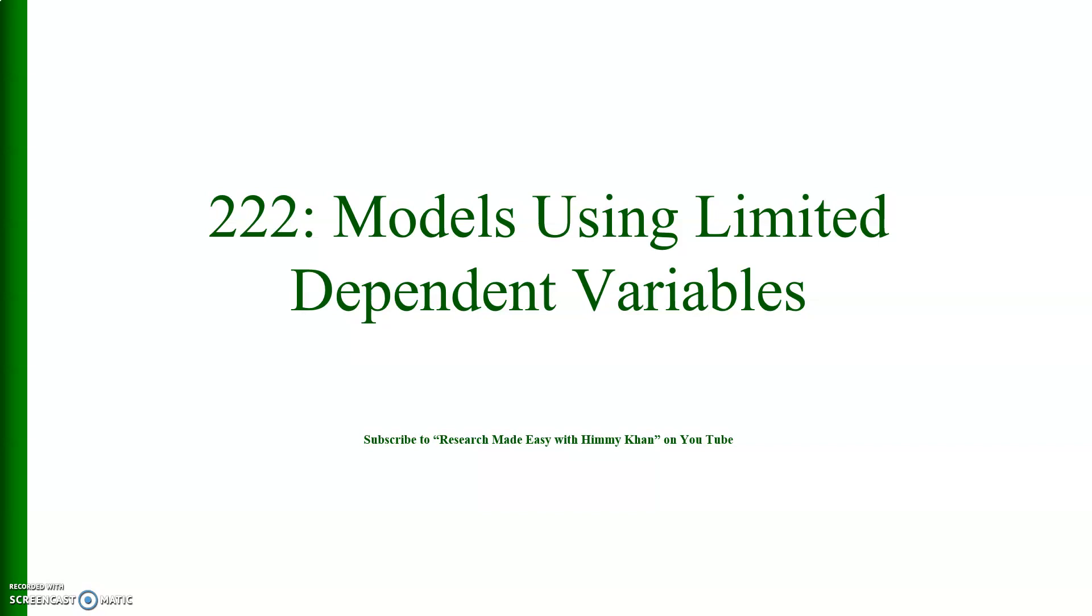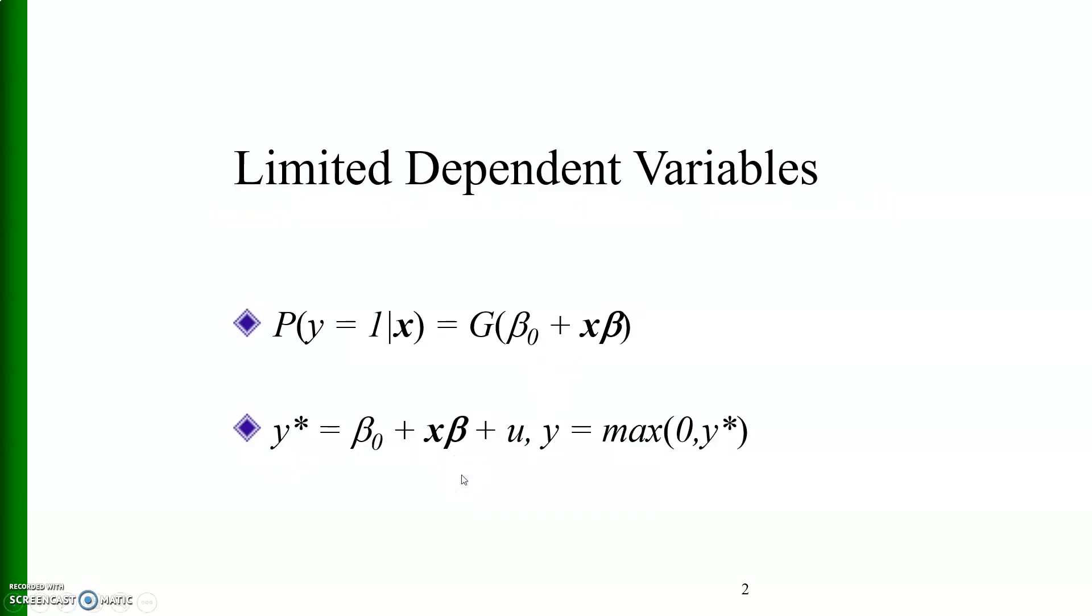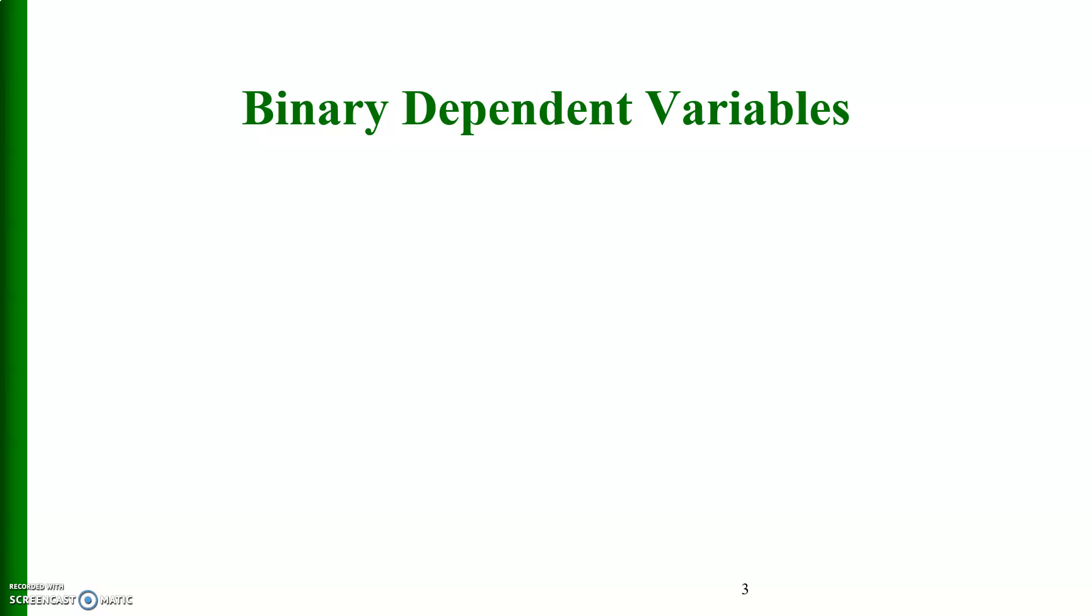Here is an example of a limited dependent variable. The definition is given mathematically here. The dependent variable may be binary or it may be multinomial. Let us start with the case of a binary dependent variable. A binary dependent variable is one which either takes the value of 1 for the presence of the quality or it takes the value of 0 for the absence of that characteristic.